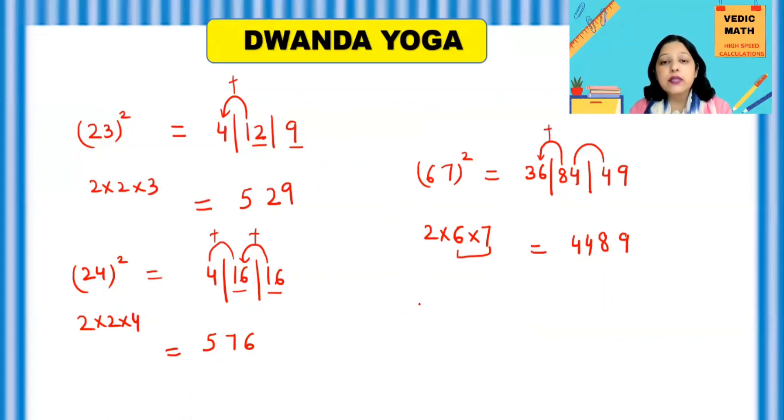Suppose you want to find a square of 76. Same process. 49. This side 36. And in the middle, 2 times 7 and times 6 multiplied with 6 will give you 84.